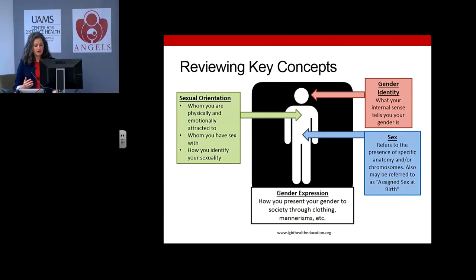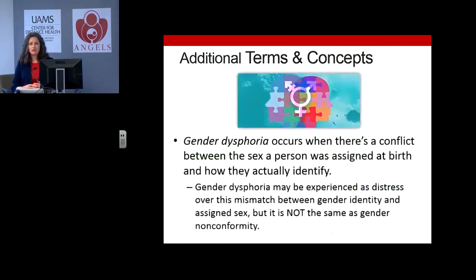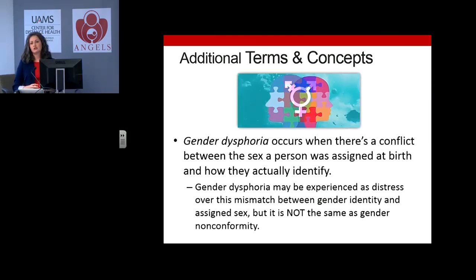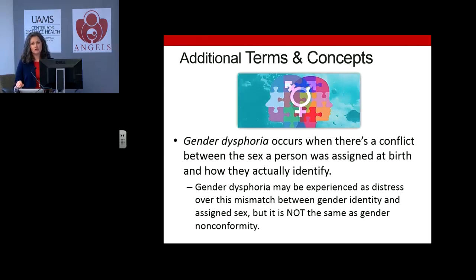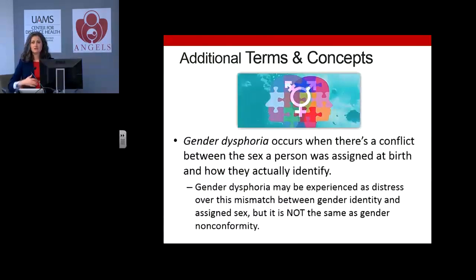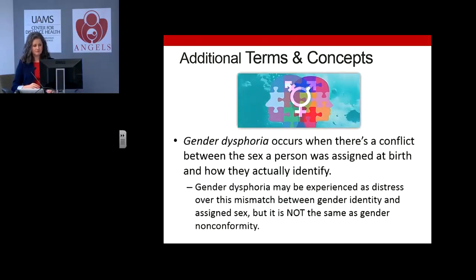An additional term to note is gender dysphoria. This occurs when there is a conflict between the sex a person was assigned at birth and how they actually identify. It may be experienced as distress over the mismatch between one's gender identity and their assigned sex, but it is not the same as gender nonconformity — whereas gender nonconformity represents an identity that someone feels is most appropriate as a label for them.